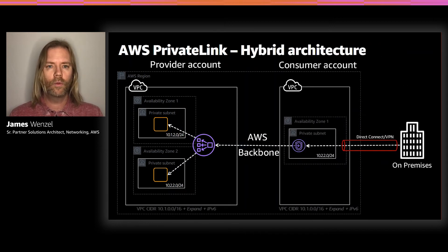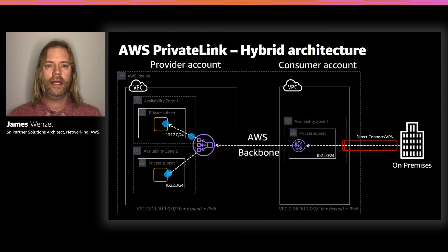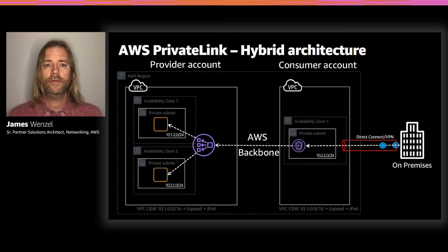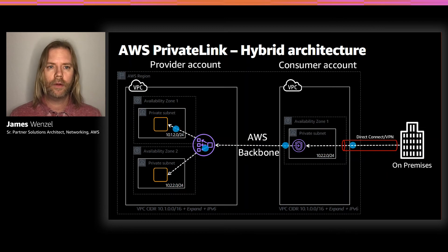Hybrid also works. One example: a Direct Connect or VPN from on-premises wants to consume something in the cloud. Let's say there's a service only available on AWS cloud. All the customer has to do is create an account in AWS, create a VPC in that region, attach their Direct Connect or VPN, and then create their Elastic Network Interface connecting it to the provider's services. As long as that Elastic Network Interface is routable to their on-premises, their on-premises routers are allowing it, and security groups are configured, traffic can simply flow and they can consume that service.